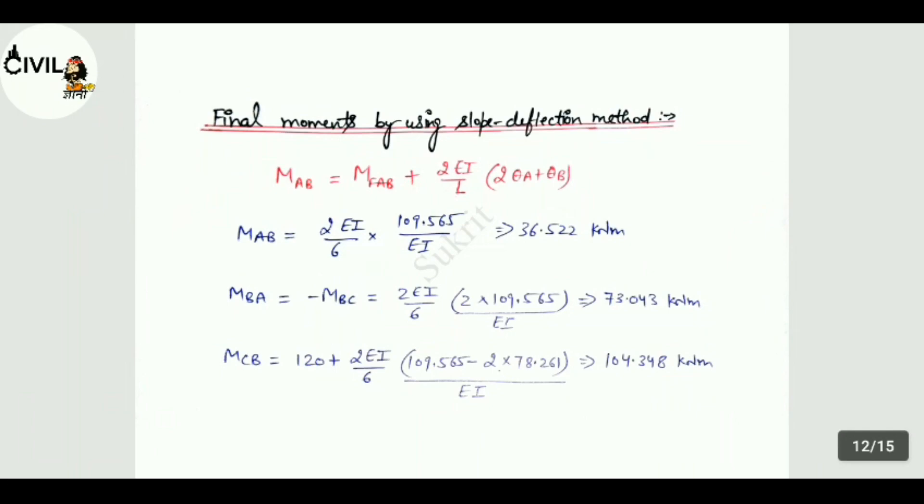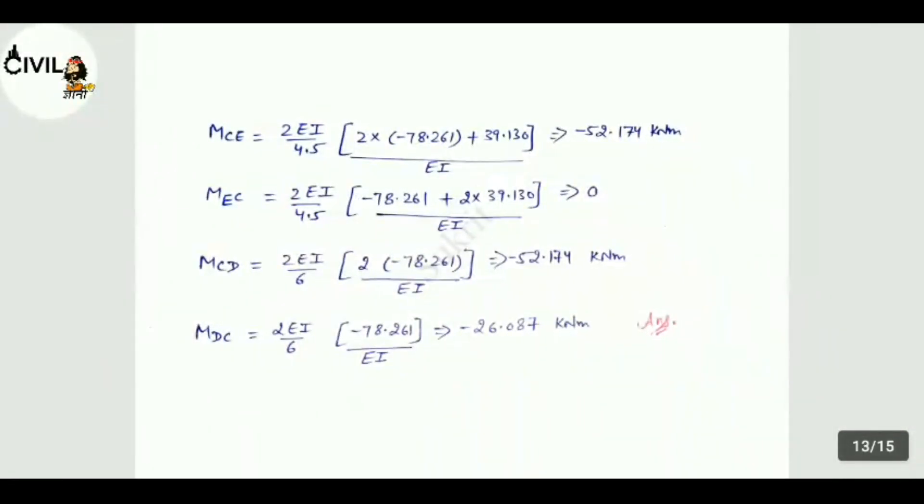Now for MCD, MF_CD is zero. Formula is 2θ_C plus θ_E. Here also θ_C is negative. So MCD value is minus 52.574 kNm. For MEC, MF_EC is also zero. Formula is θ_E plus 2θ_C. In this case also θ_C is negative. MEC value is zero.